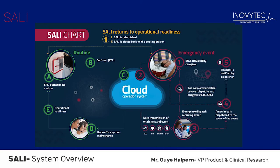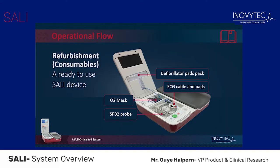The following chart is a summary of the system's operational flow. SALI has a secure cloud-based system that manages its communication and data transmission. During routine time, SALI is docked on its docking station; every 12 to 24 hours, a routine automated test protocol is sent, verifying that the SALI is ready to use. During an emergency, once used, the patient's parameters are sent to the emergency dispatch, allowing the dispatcher to evaluate the situation and decide which ambulance to send. Once the event is over, the SALI is refurbished and placed back on its docking station.